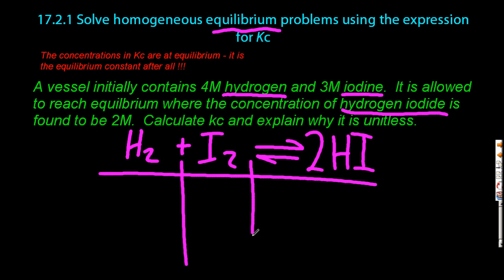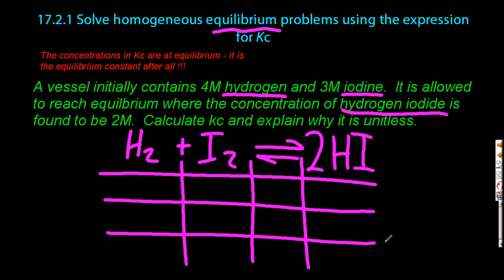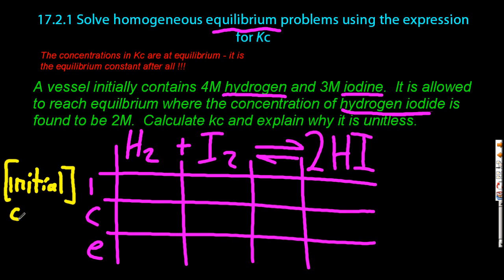Now we're going to draw a grid underneath and make the so-called ICE table. I, C, and E. I stands for the initial concentration of the reactants and products. C is the change in concentration. And E, that's the one we want - the equilibrium concentration. We're going to put that into Kc.